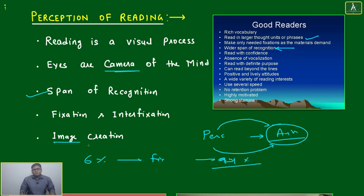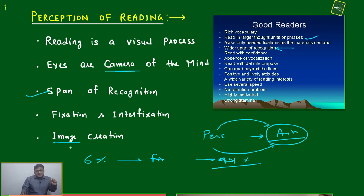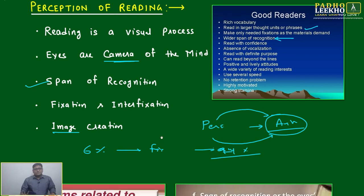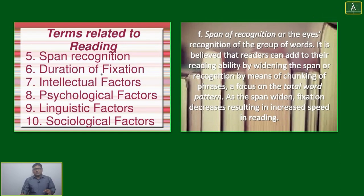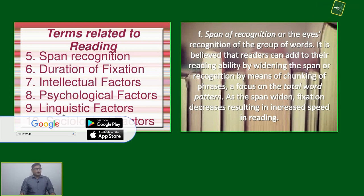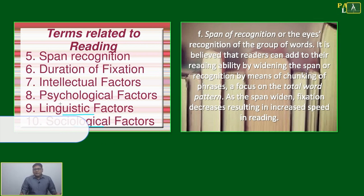Fixation and inter-fixation, and afterwards how an image will be created — that is going to affect how your brain perceives the thing. If the image is created wrong, then the brain will also perceive it wrong. There are also psychological factors, linguistic factors, and sociological factors — the environment in which you have grown up — all of these matter.